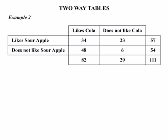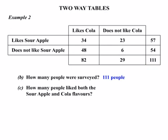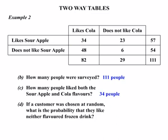Looking at the questions: how many people were surveyed? The grand total is 111 people. How many liked both Sour Apple and Cola? Looking at the intersection of those rows and columns, that's 34 people. For the probability that a randomly chosen customer liked neither flavoured frozen drink: those who don't like Sour Apple and don't like Cola cross over at the value of 6, out of a grand total of 111, giving a probability of 6 over 111.